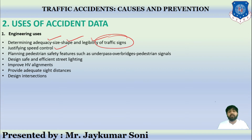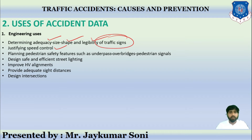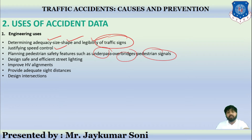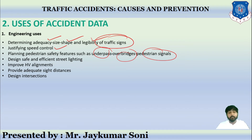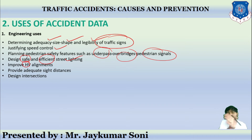Engineering uses also include planning pedestrian safety features such as underpasses, over bridges, and pedestrian signals. On highways where vehicles travel at full speed, pedestrians are often involved in accidents, so safety features must be provided. Additionally, safe and efficient street lighting must be designed, and horizontal and vertical alignments must be improved so that curves are not sharp enough to cause accidents.